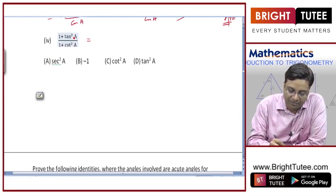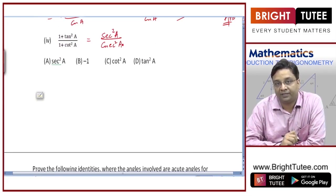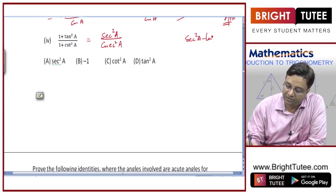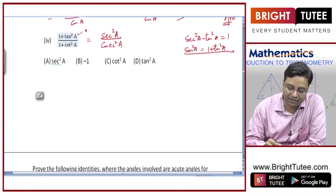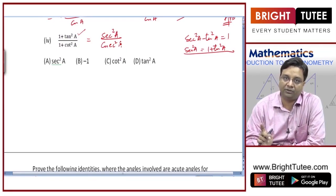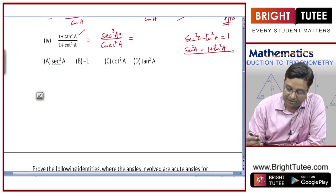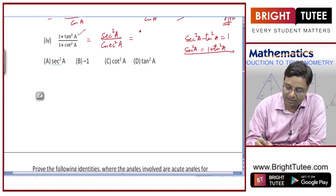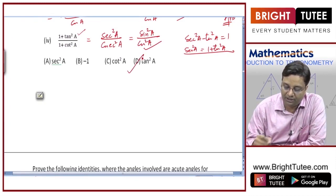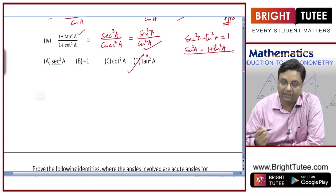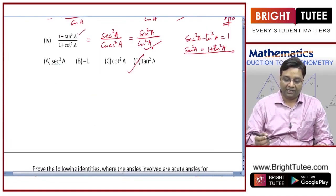Next MCQ: (1 + tan²a)/(1 + cot²a). We can directly write 1 + tan²a as sec²a, and 1 + cot²a as cosec²a using the respective identities. Converting: sec²a is 1/cos²a, and cosec²a is 1/sin²a. So the expression becomes sin²a/cos²a, which is tan²a. Option D is correct.